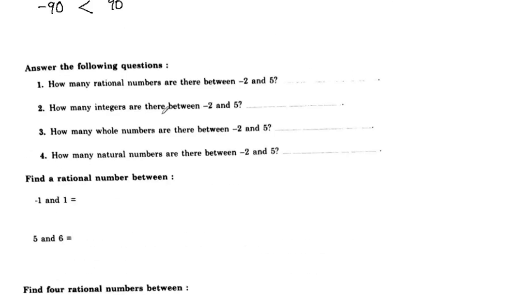Answer the following questions. How many rational numbers are there between negative 2 and 5? If we count numbers between any two numbers, the count is infinite.